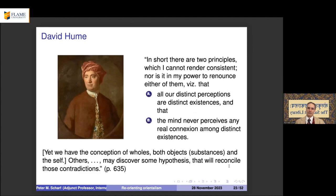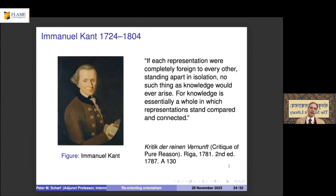Hume concludes he cannot reconcile two principles: that all our distinct perceptions are distinct existences, and that the mind never perceives any real connection among distinct existences — yet we have the conception of wholes, both object-substances and the self. He says, 'Others may discover some hypothesis that will reconcile those contradictions,' and gives up.